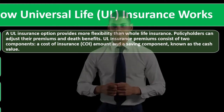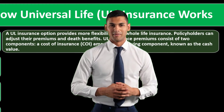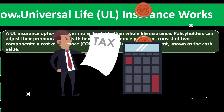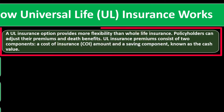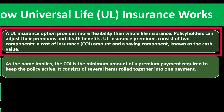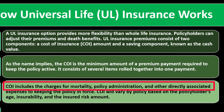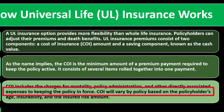I would always be asking: why don't I buy just term insurance and invest the difference? Is there a more complex tax strategy to lower my taxes, or possibly estate planning, or a need for more security in my overall life insurance coverage that requires a more complex insurance policy? As the name implies, the COI is the minimum amount of a premium payment required to keep the policy active. It consists of several items rolled together into one payment — COI includes charges for mortality, policy administration, and other directly associated expenses to keeping the policy in force.